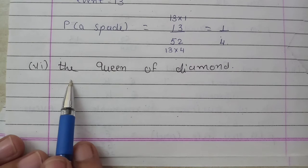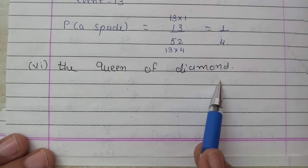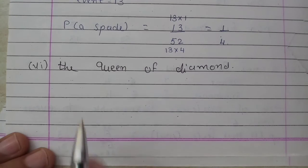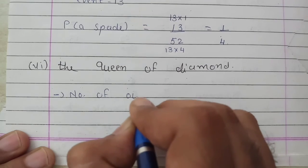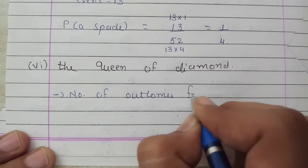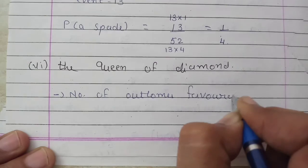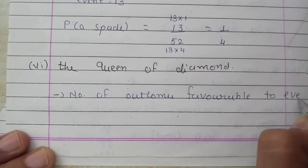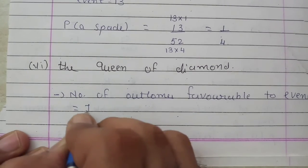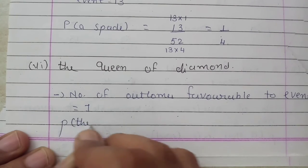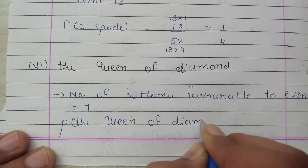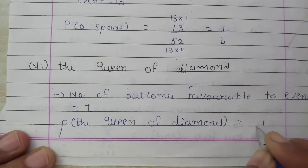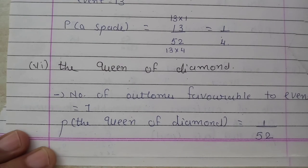Next, the queen of diamonds. In the diamond suit there is only one queen. So the favorable outcomes are 1. The probability of getting the queen of diamonds will be 1 upon 52.